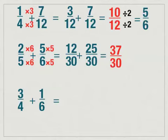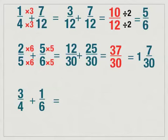This is an improper fraction because the larger number is on top. When we have an improper fraction, we need to change it to a mixed number. To do that, you divide thirty-seven by thirty. Thirty goes into thirty-seven one time, and you have seven left over. So one becomes your whole number, and seven was what was left over, over thirty. You cannot simplify seven over thirty, so this is your final answer.